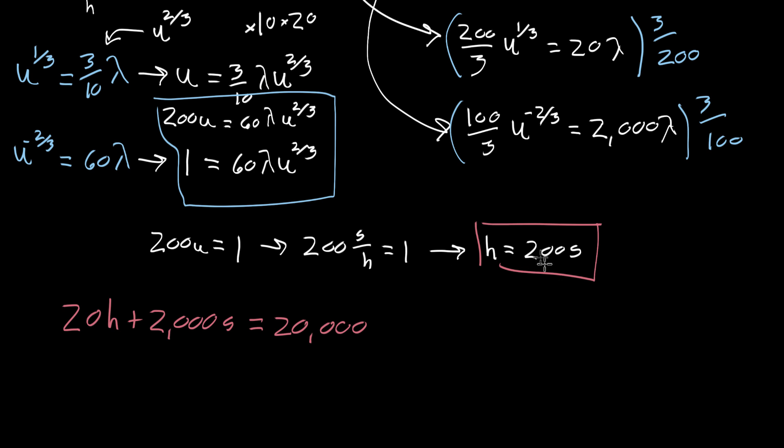And now we can just substitute in. Instead of H, I'm gonna write 200S. So that's 20 times 200S plus 2,000 times S is equal to 20,000.